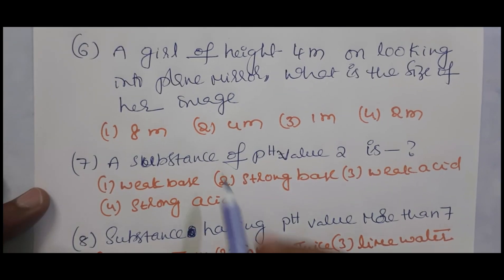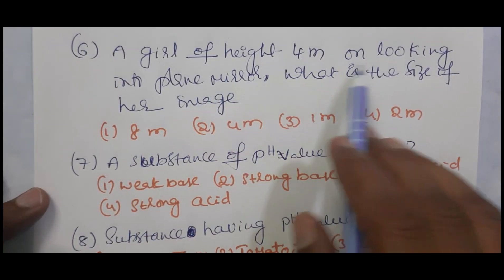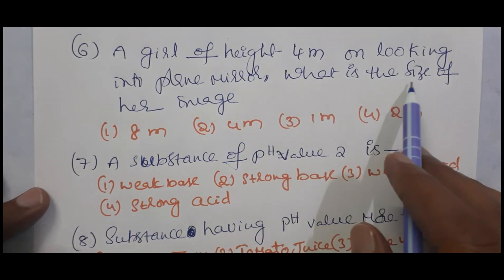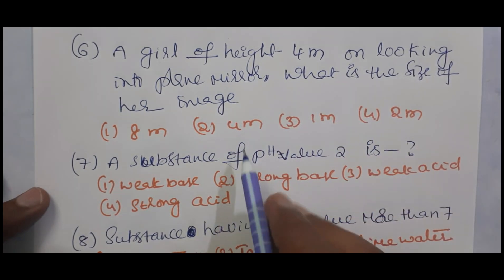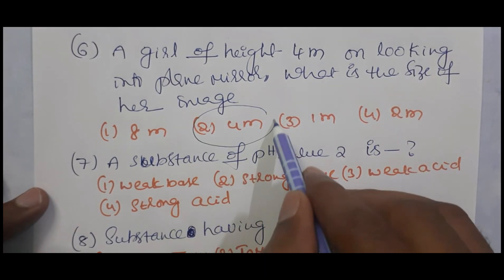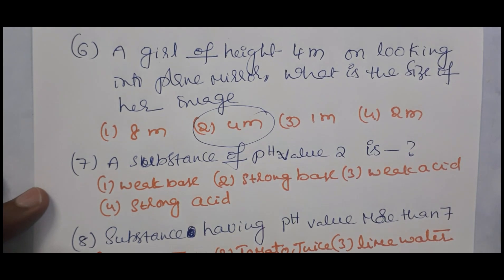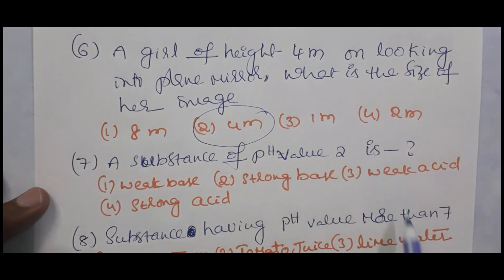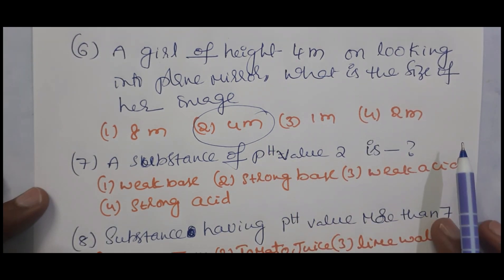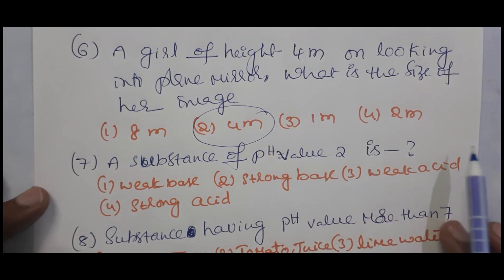Question 6: A girl of height 4 meters looks into a plane mirror. What is the size of her image? In the case of a plane mirror, image size equals object size — that is 4 meters. So the answer is 4 meters. Note: this topic is also not in the present syllabus.